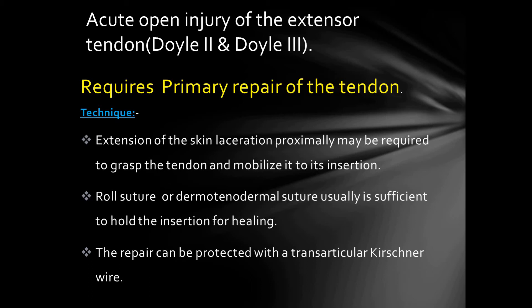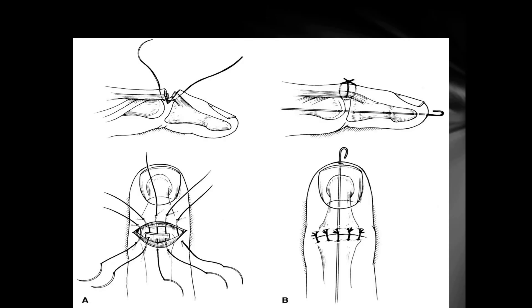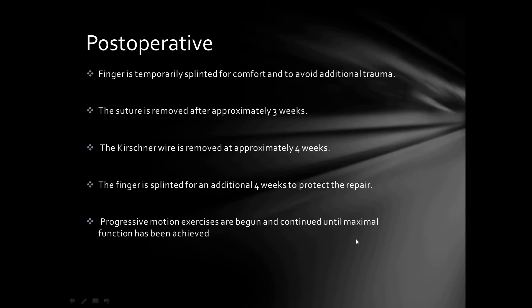Acute open extensor tendon injuries (Doyle 2 and 3) require primary repair of the tendon. Extension of the skin laceration proximally may be required to grasp and mobilize the tendon to its insertion. A roll suture or dermotenodermal suture is usually sufficient. The repair can be protected with a transarticular K-wire. In the dermotenodermal technique, the tendon is brought to the distal interphalangeal joint and multiple sutures are passed across the skin and through both edges of the tendon, with the wound closed by multiple knots.